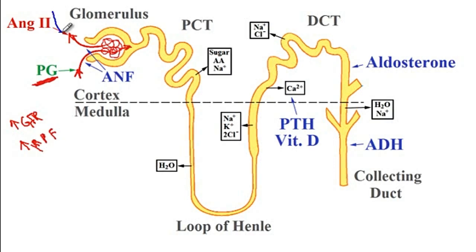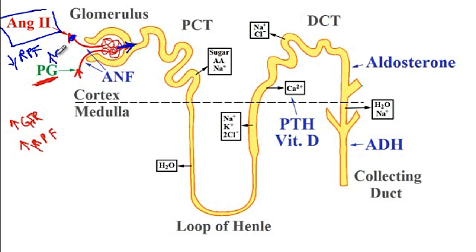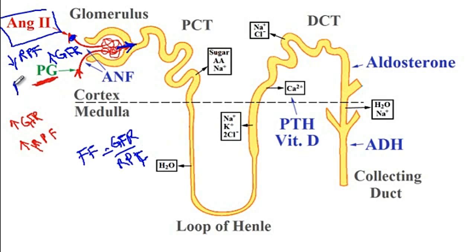Angiotensin acts on the afferent arteriole and causes constriction. If the afferent arteriole is constricted, there would be lower renal plasma flow, but since pressure builds up, there would be more glomerular filtration rate. Since filtration fraction is GFR divided by renal plasma flow, angiotensin 2 will cause an increase in the filtration fraction.